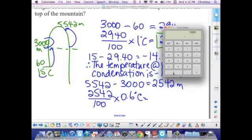We're going to box this because we want to come back to it. And what we're going to do now is figure out the temperature at the top of the mountain. So we're going to need our two boxed numbers here.